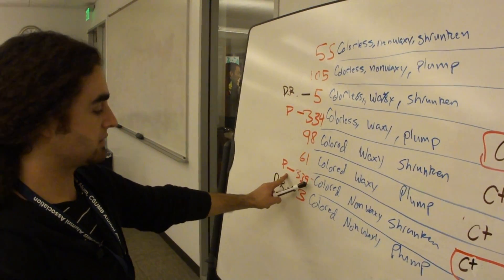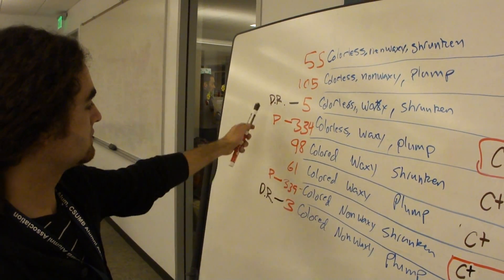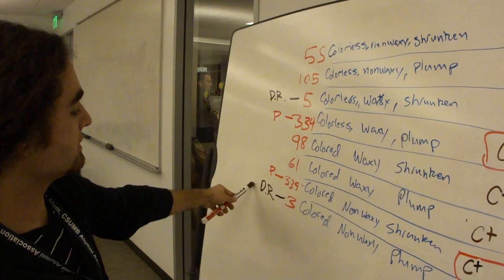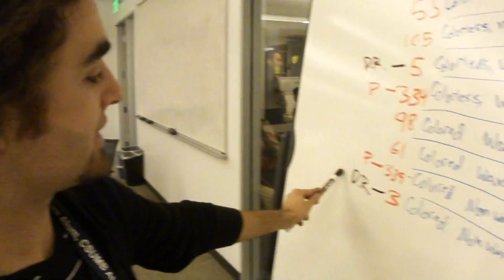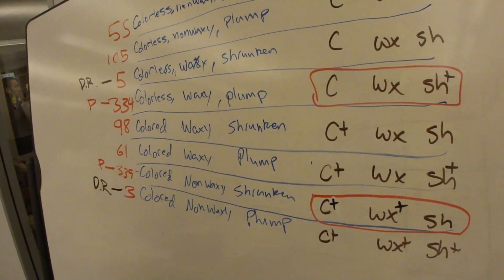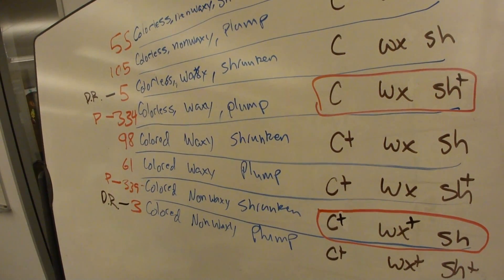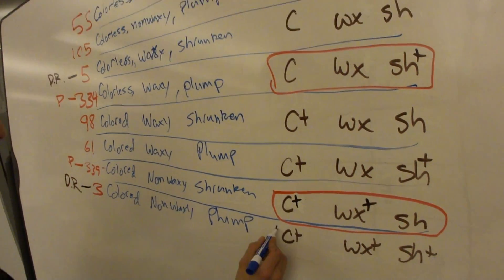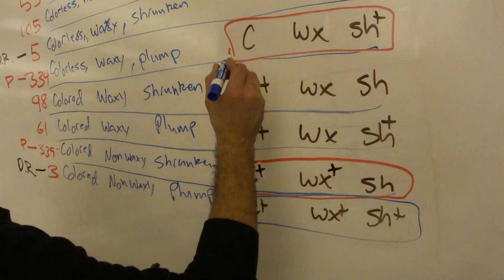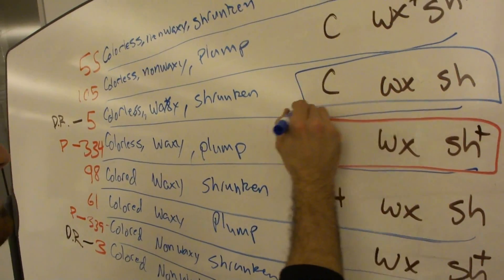We ascertain which are the most numerous two groups. Those are parentals. Then our least numerous, those are our what? Double recombinants. Right, okay. So we have put a red square around the parentals, haven't we? Okay. Let's put a blue one around the double recombinants.